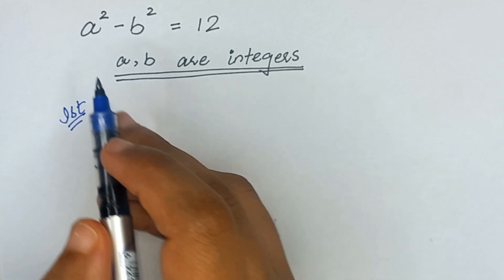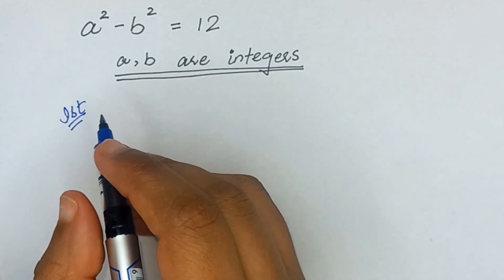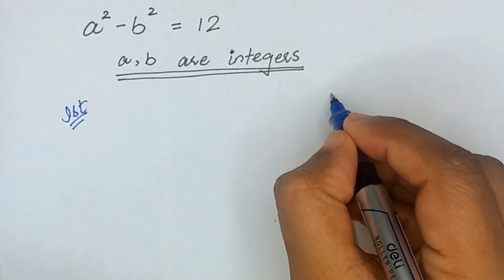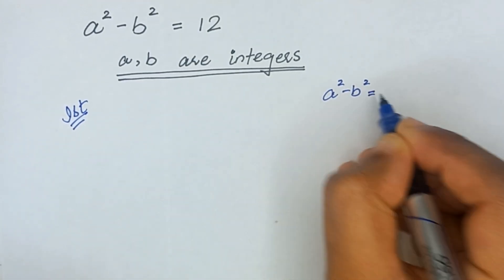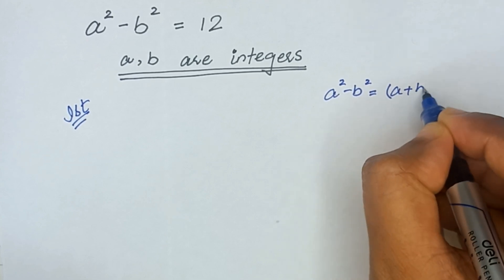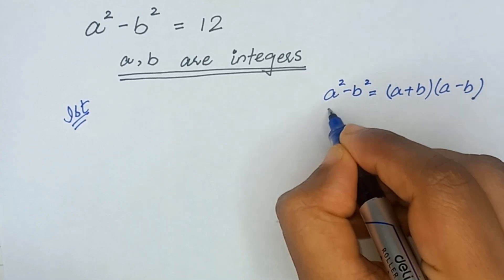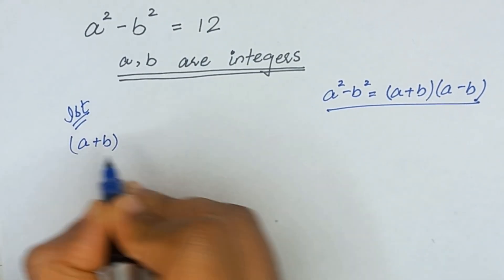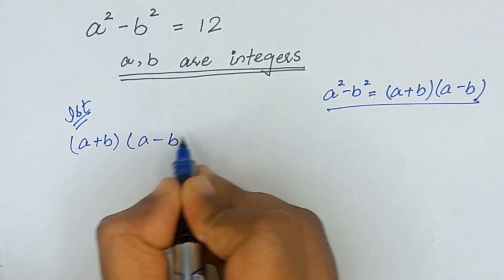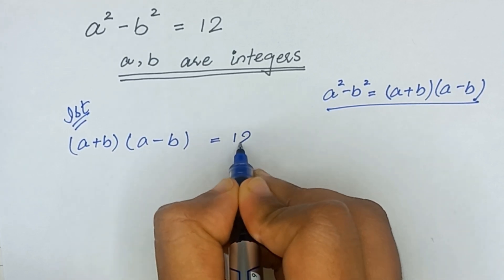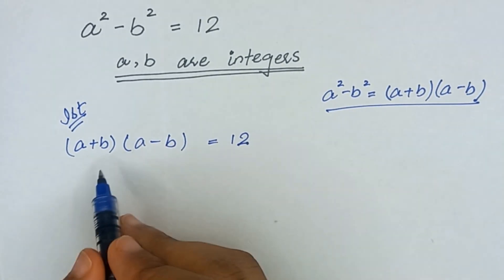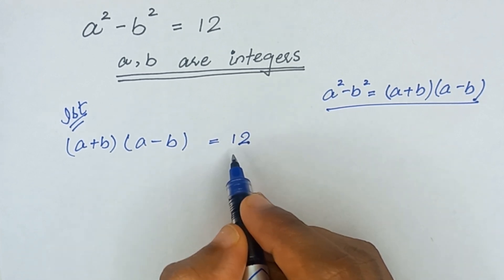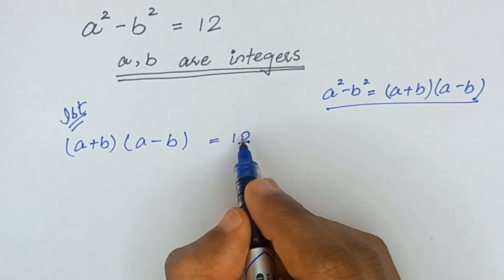In the second method, I will solve this question without using the identity. So in the first method, I will use the identity a squared minus b squared is equal to a plus b times a minus b. It becomes a plus b times a minus b is equal to 12. On the left hand side we have the product of two numbers, and we will factor 12 as a product of two numbers.